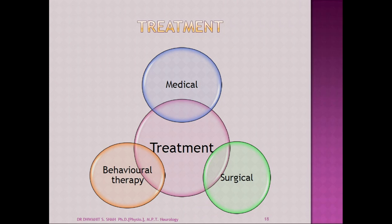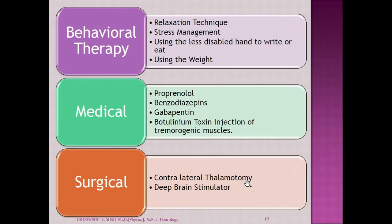Treatment options include behavioral therapy, medical management, and surgical treatment. Behavioral therapy includes physiotherapy, relaxation techniques, stress management, using the less-affected hand for writing or eating, and weight-bearing exercises to reduce tremors. Medical management includes propranolol, benzodiazepines, gabapentin, and botulinum toxin injection for tremorigenic muscles. If not relieved with these, surgical treatment is indicated — either contralateral thalamotomy or deep brain stimulation.